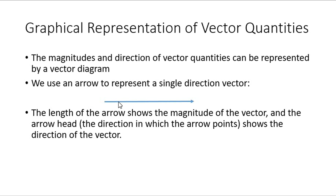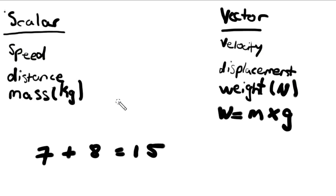The graphical representation of vector quantities: magnitudes and direction of vector quantities can be represented by a vector diagram. We use an arrow to represent a single direction vector.